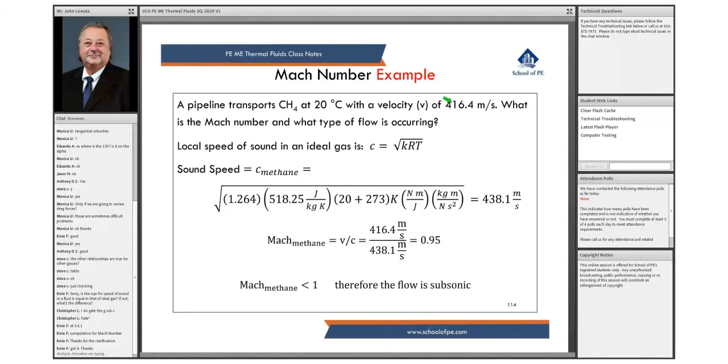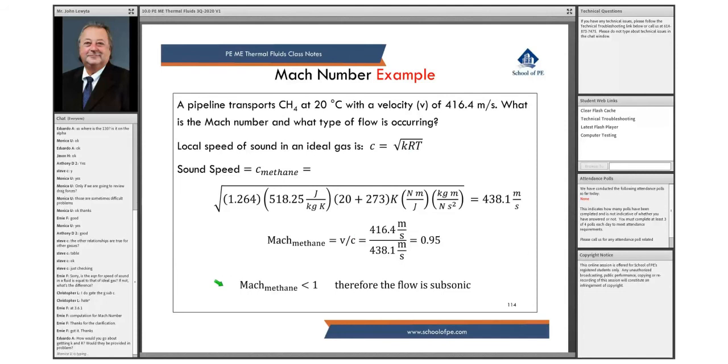So that's the speed of sound. The relationship between the speed in the pipeline is 416 meters per second divided by this local speed of sound. We get 0.95, which is a little bit less than one.